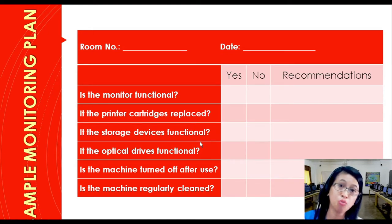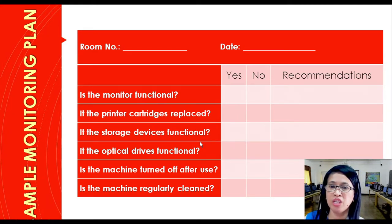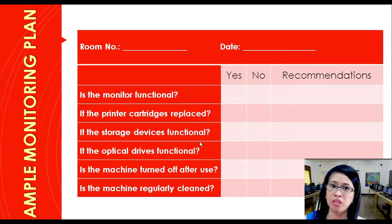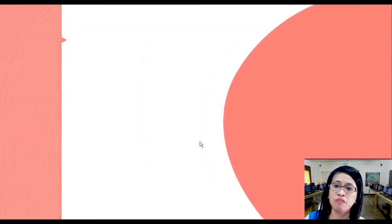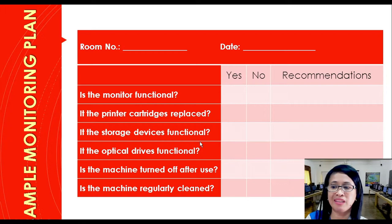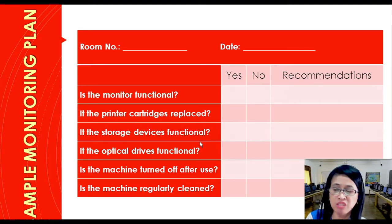You need to include the room number, date, and then answer the questions in the first column — whether faults or errors have been rectified. Put a check mark if it has been performed (yes or no). If performed, what is your recommendation? Sample checklist questions include: Is the monitor functional? Is the printer cartridge replaced? When do we need to change the cartridge? Is the storage device functional? Is the optical drive functional? Is the machine turned off after use? This is very important — you have to shut down the computer properly. Is the machine regularly cleaned? Dust is a primary reason why computer systems do not function well, so you must check both the outside and inside of the system unit.